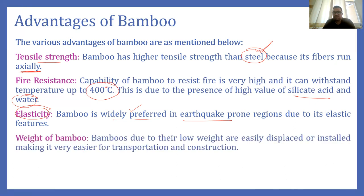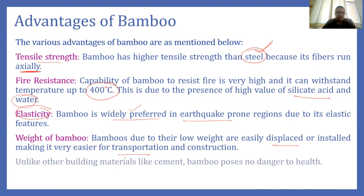Bamboo has high strength and low weight, so it can be easily displaced, installed, and transported. Unlike other building materials, bamboo poses no danger to health. For example, cement manufacturing involves huge pollution, but using bamboo in construction poses no danger to health. It promotes green building architecture.